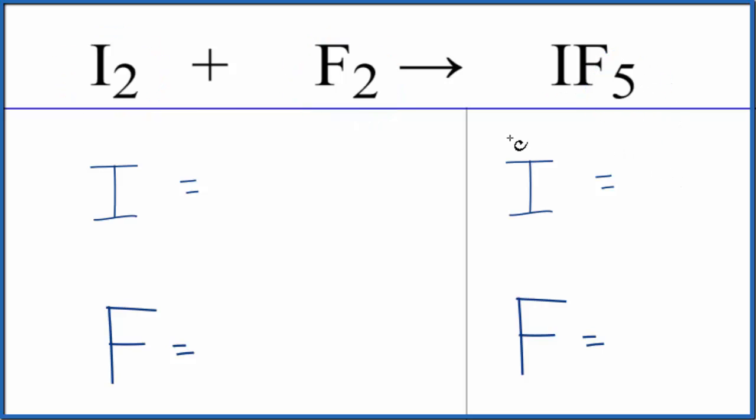The first thing we'll do is count the atoms up on each side of the equation. We have two iodine atoms, then two fluorine atoms. Product side, only one iodine, five of the fluorine atoms.